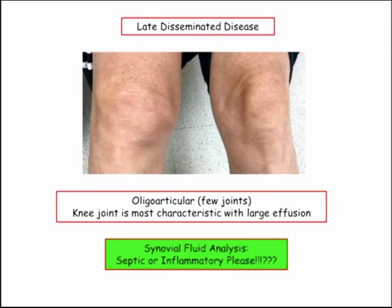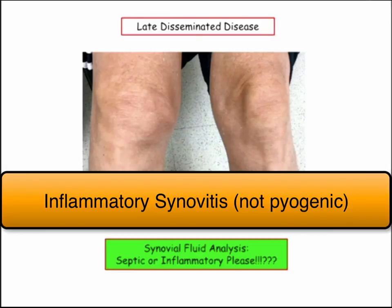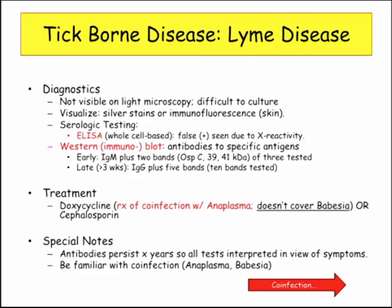Take-home message on the joints: you don't find the bugs in there. It's an inflammatory synovial fluid analysis — about 25,000 cells, half of them PMNs, negative cultures, negative crystals, negative Gram stain. Diagnostics: you don't see it on light microscopy, it's hard to culture. They may describe silver stain. Serologic testing — ELISA gives false positives. Western immunoblot is how we do it diagnostically. They never really ask you this stuff; they tell you the patient has clinical manifestations of a tick-borne illness. Treatment: doxycycline.